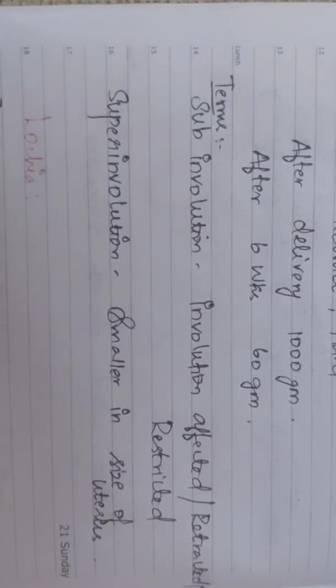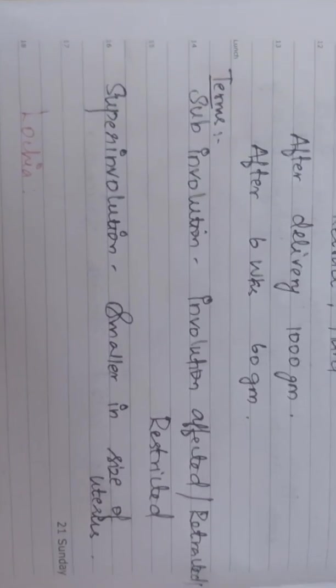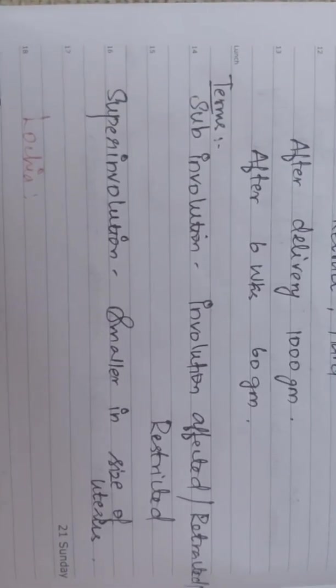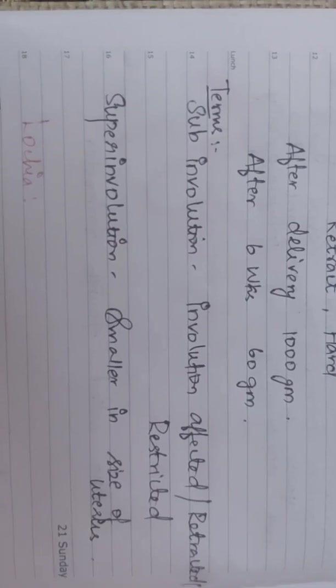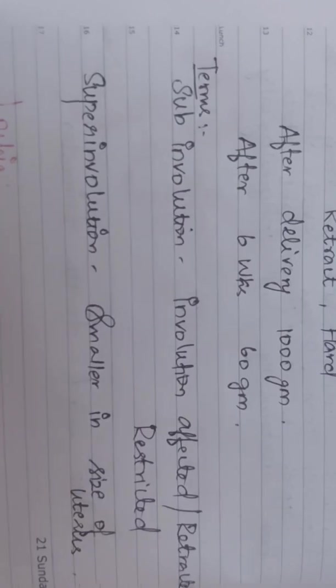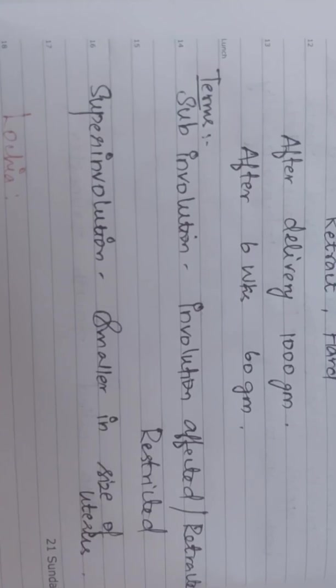Subinvolution is when the involution is retarded or restricted. Superinvolution is when the uterus size becomes very small.